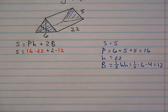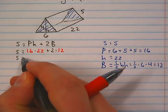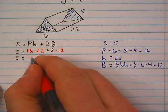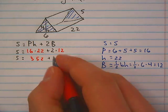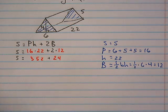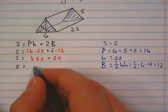So when we do that we get S is equal to 352 plus 2 times 12 is 24, so S is equal to 376.